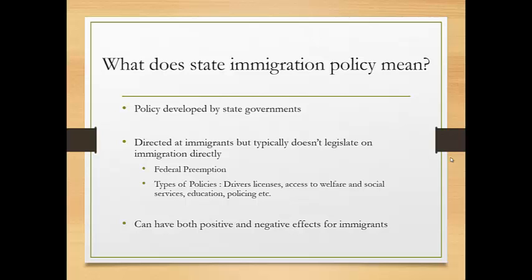For example, some cities create amnesty areas or sanctuary policies, saying their city will not cooperate with enforcement of federal immigration policy — their police won't participate in deportation exercises. This can have a positive effect on immigrants. On the other hand, we also see really negative policy, such as what was passed in Arizona requiring immigrants to carry documentation at all times and allowing police to ask for it. That was struck down as unconstitutional due to its negative impacts on the immigrant and larger Latino population.